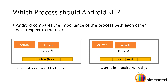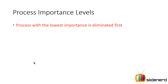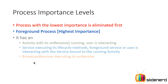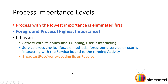Let's take a deeper look at the process termination algorithm in Android and the different process importance levels. The one with the lowest importance is terminated first when memory is low. The most important is the foreground process. It can have an activity whose onResume is currently running, a service currently executing its lifecycle methods, or a broadcast receiver currently executing its onReceive method. Any one of these makes your app a foreground process.